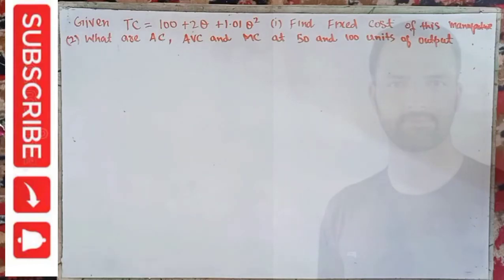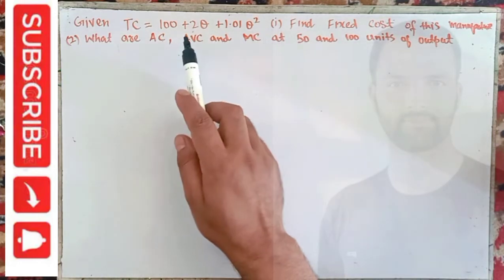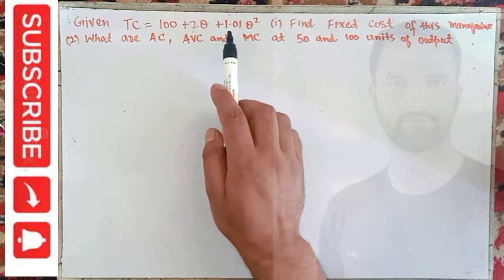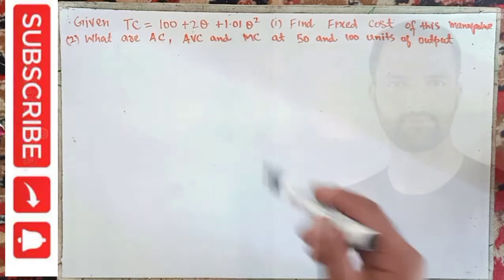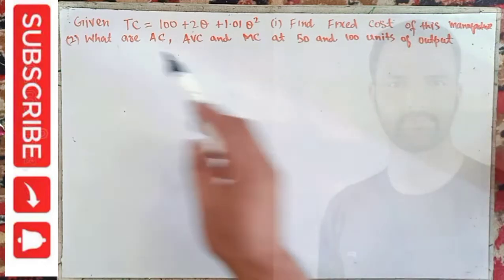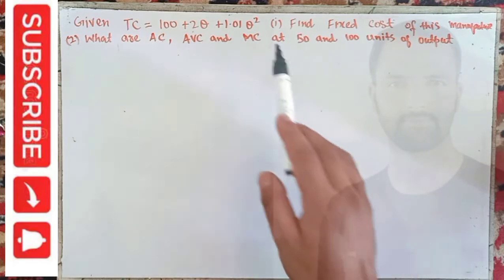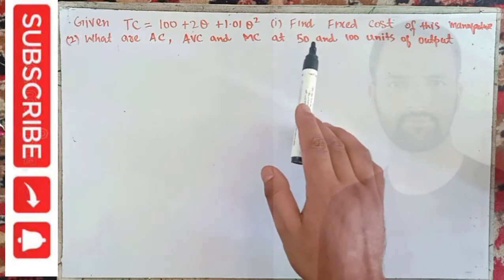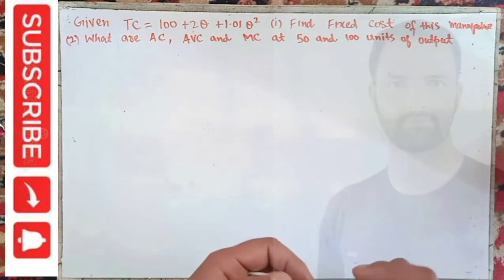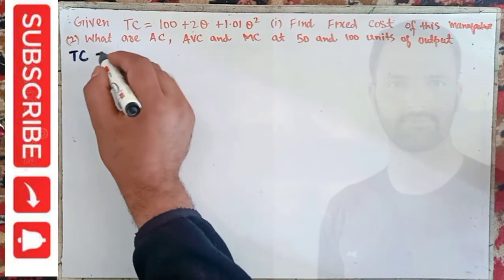In this video we will try to solve a problem asked by a brother on YouTube. The question is: a given total cost function is TC = 100 + 2Q + 1.01Q². Find the fixed cost of this manufacturer. The second part is: what are the average cost, average variable cost, and marginal cost at 50 and 100 units of output?